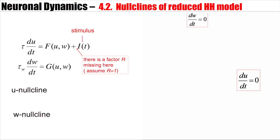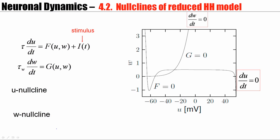So here is again our system of equations. If we follow the reduction steps that I've explained starting from the Hodgkin-Huxley model, we arrive at this kind of situation. The horizontal axis is the voltage U, the vertical axis is the auxiliary variable W.